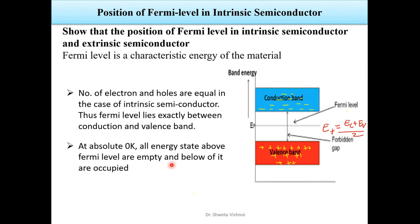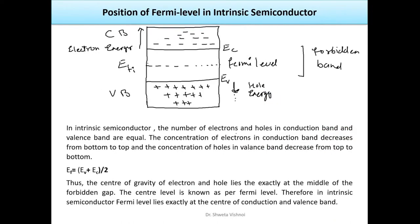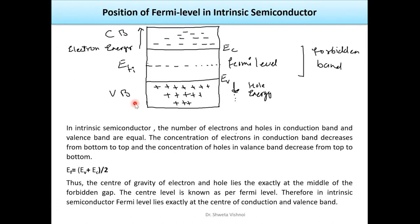At absolute zero, all energy states above the Fermi Level are empty and below it are occupied. In intrinsic semiconductor, the number of holes in the valence band and electrons in the conduction band are equal. Therefore, EF equals (EV plus EC) divided by 2. The center of gravity of an electron and a hole lies exactly at the middle of the forbidden gap — this center level is known as the Fermi Level.